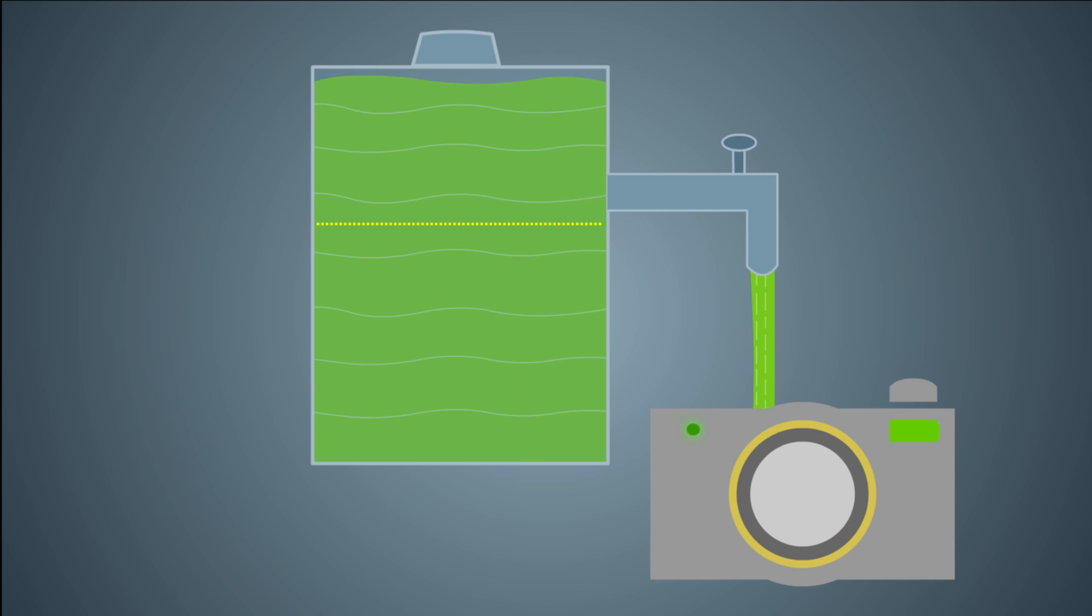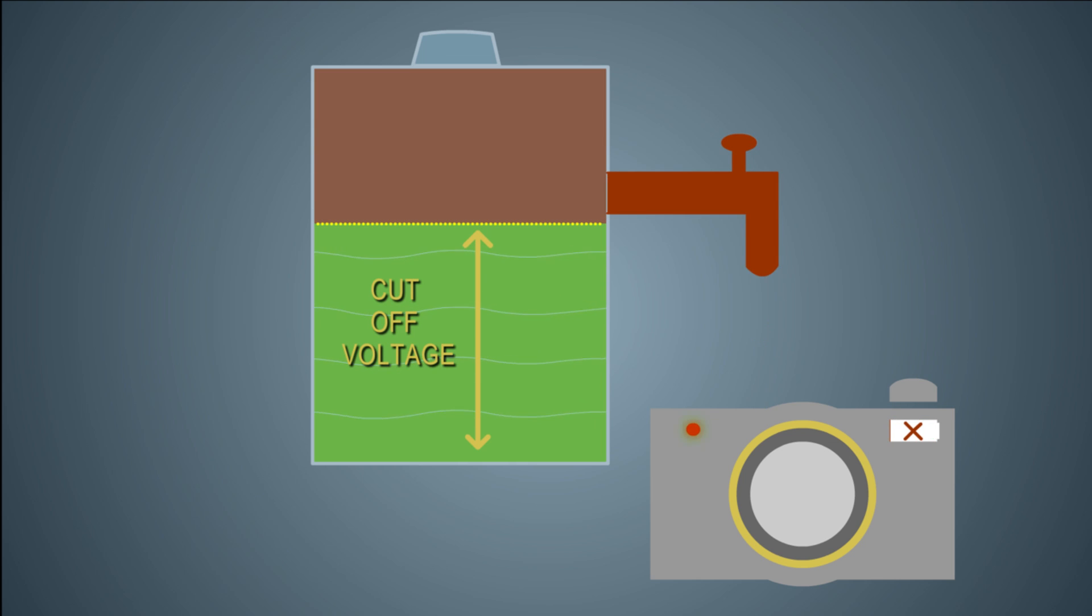The cutoff voltage is the minimum amount of juice required in the container for the device to operate. Once the voltage level dips below the cutoff voltage, juice cannot flow to the device.